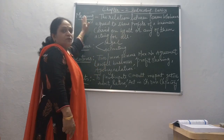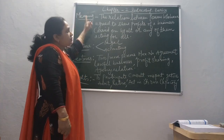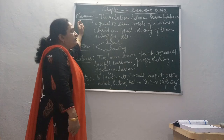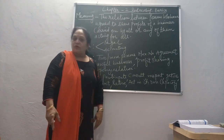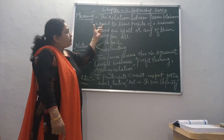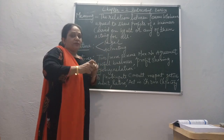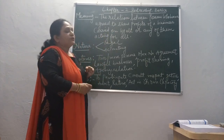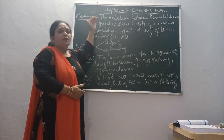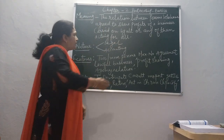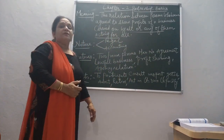We have seen in class what is the meaning of partnership — that is the relationship between persons who have agreed to share the profits of the business carried on by all or any of them acting for all. The phrase 'carried on by all or any of them acting for all' gives the agency relationship among the partners.